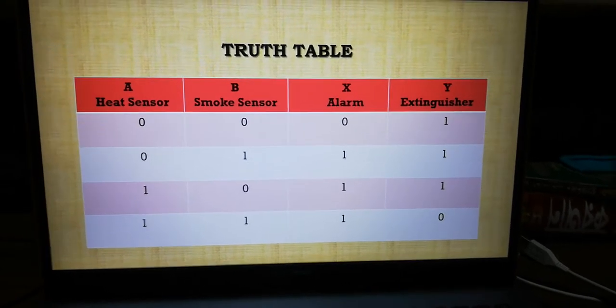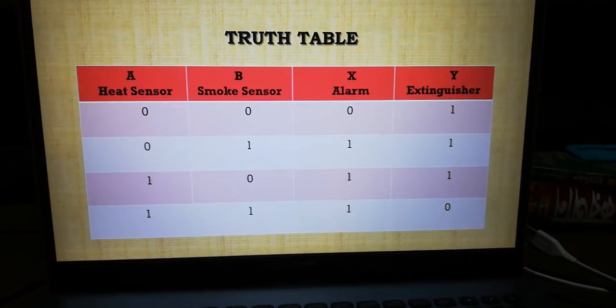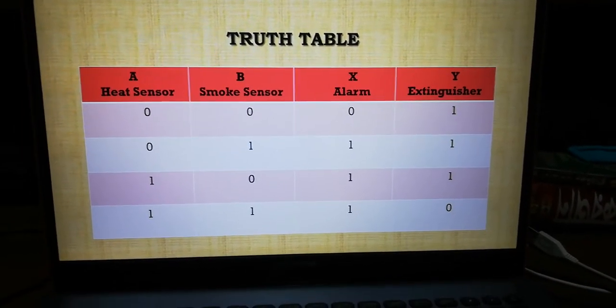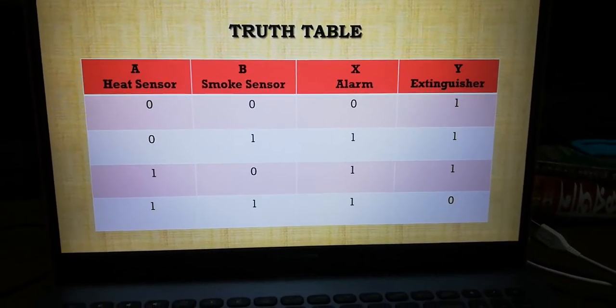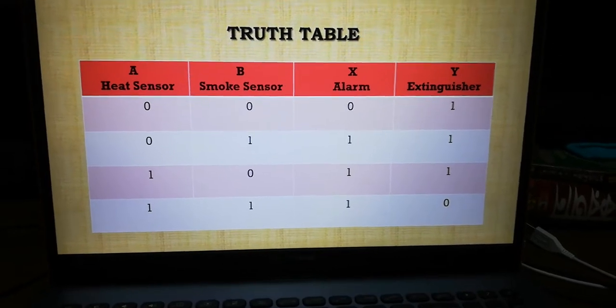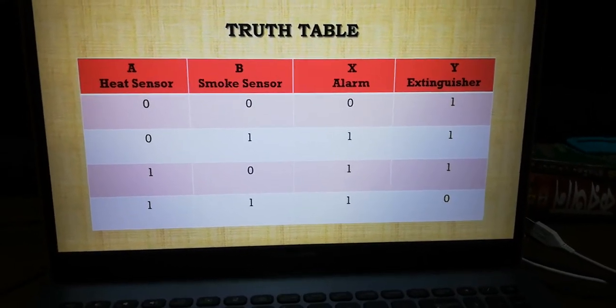When heat sensor is zero but the smoke sensor is one, then the output X is one and Y is one. That means both are one.